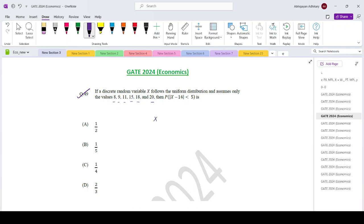This random variable x can take any value 8, 9, 11, 15, 18 and 20 and it follows a uniform distribution. That means all these observations have the equal probability of occurrence.